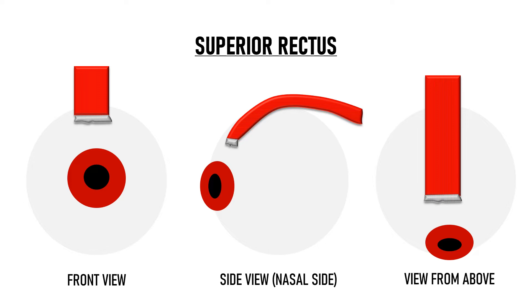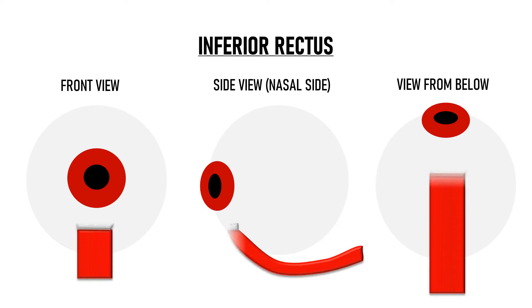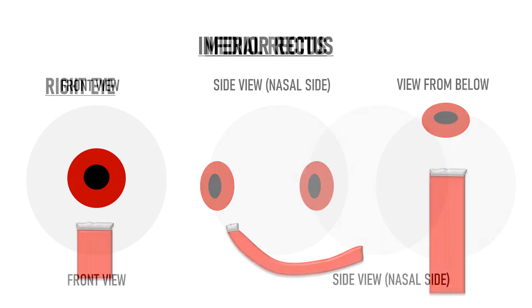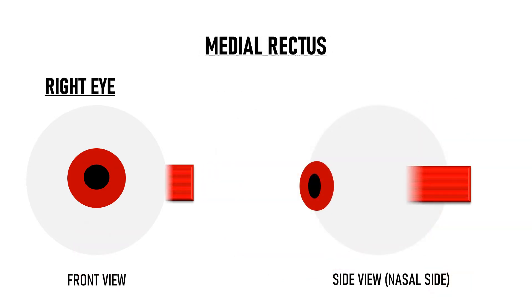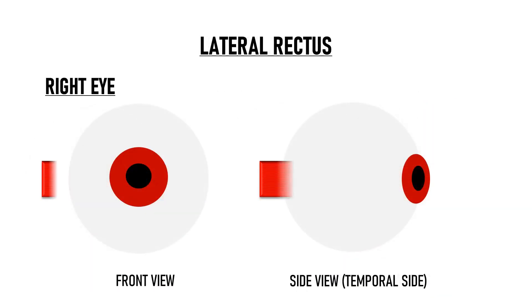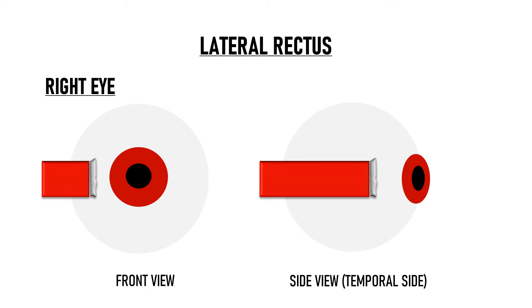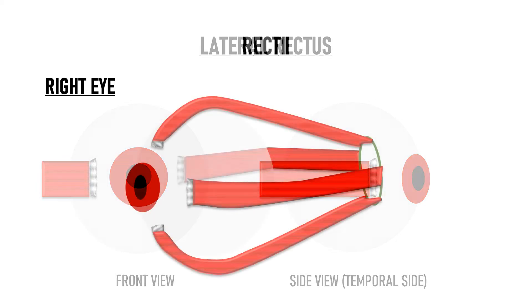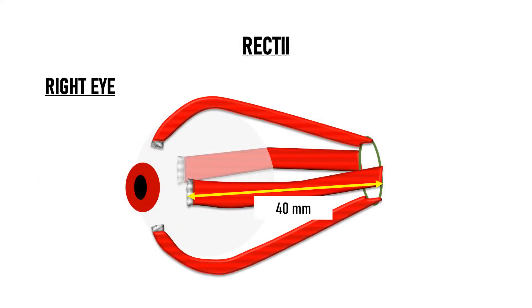Inferior rectus gets inserted on the inferior sclera. Medial rectus gets inserted on the nasal sclera. Lateral rectus gets inserted on the temporal sclera. All 4 recti are approximately 40 mm long and they all insert into the sclera by tendinous insertions.